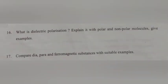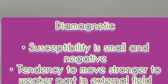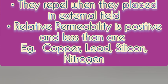Question 16. What is dielectric polarization? Explain it with polar and non-polar molecules. Give examples. Answer: Diamagnetic. Susceptibility is small and negative. Tendency to move stronger to weaker part in external field. They repel when placed in external field. Relative permeability is positive and less than 1. Examples: copper, lead, silicon and nitrogen.